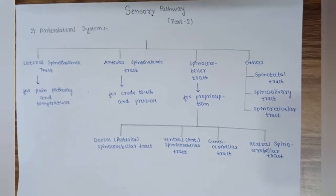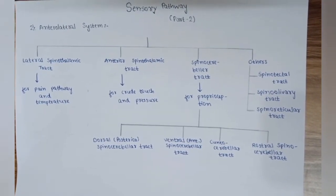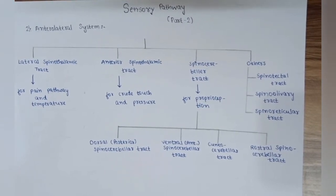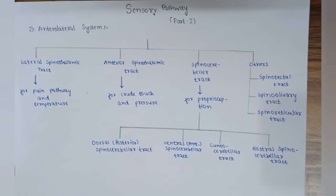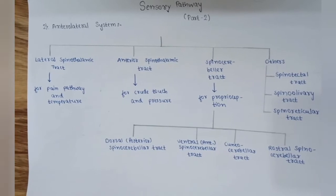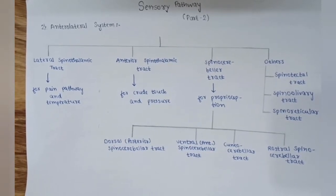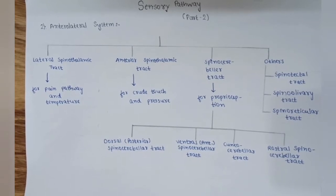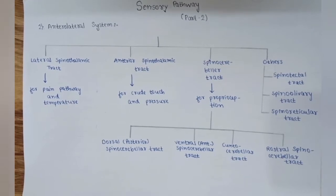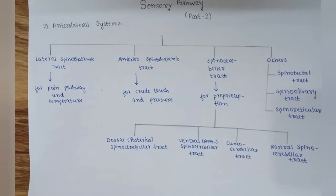The four types of the anterolateral system are: first, the lateral spinothalamic tract for pain and temperature; second, the anterior spinothalamic tract for crude touch and pressure; third, the spinocerebellar tract for proprioception; and others include the spinotectal tract, spinolivary tract, and spinoreticular tract. The spinocerebellar tract is further divided into four types: dorsal and ventral spinocerebellar tracts among them.